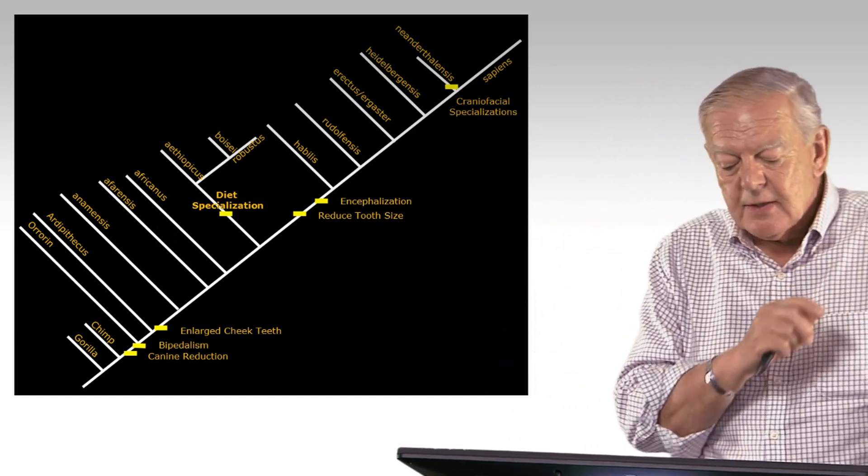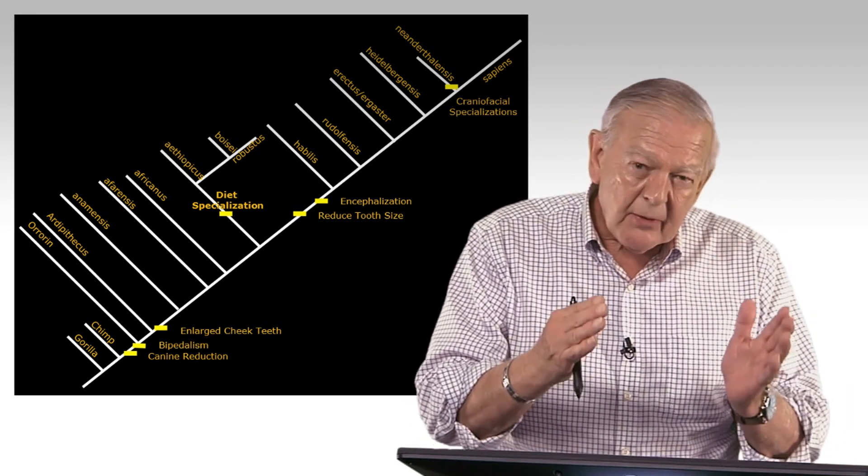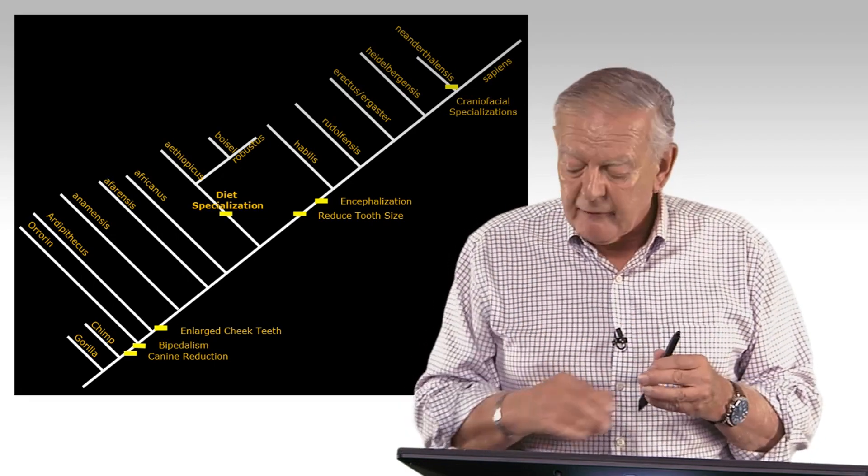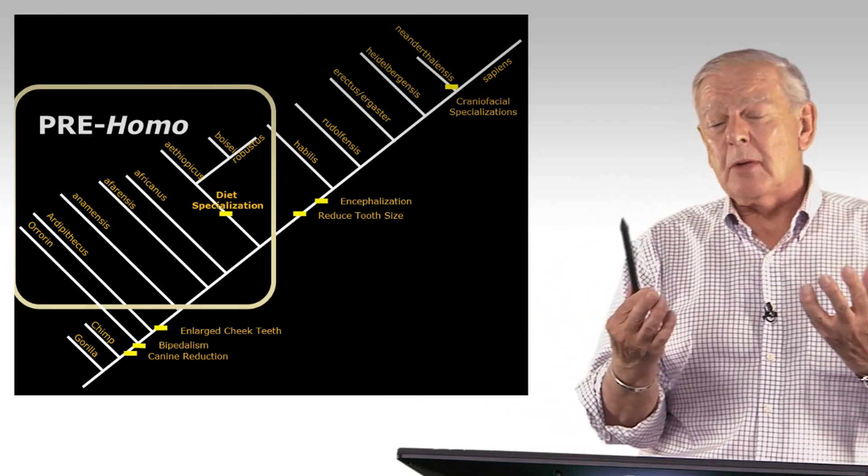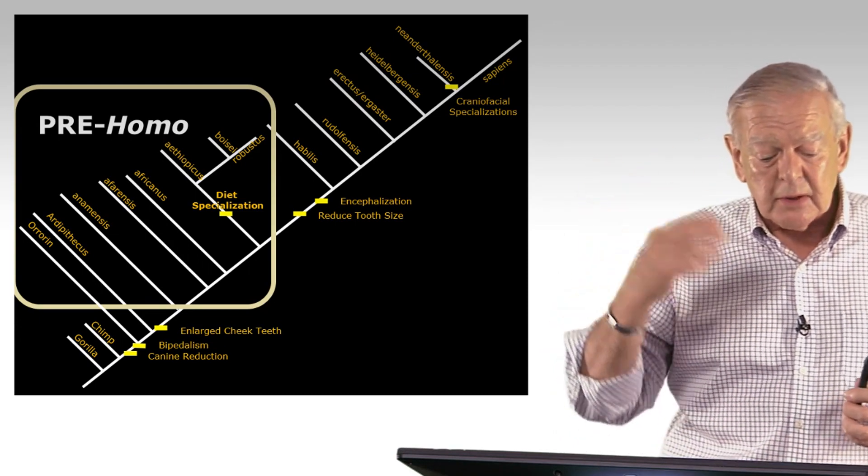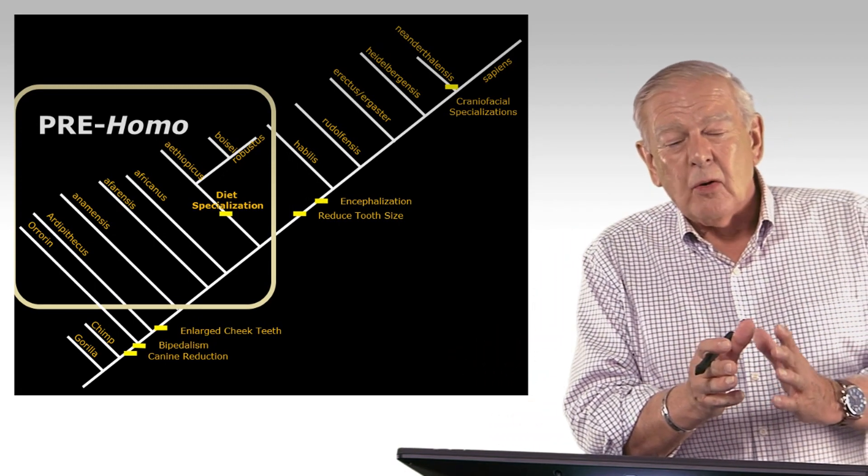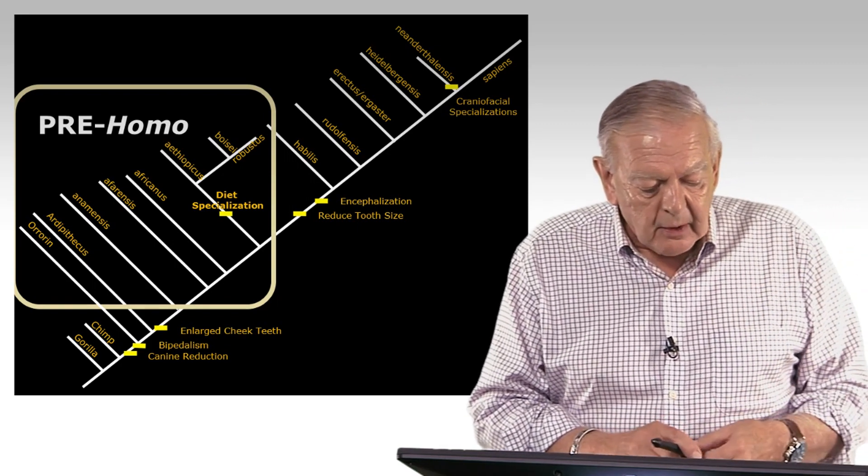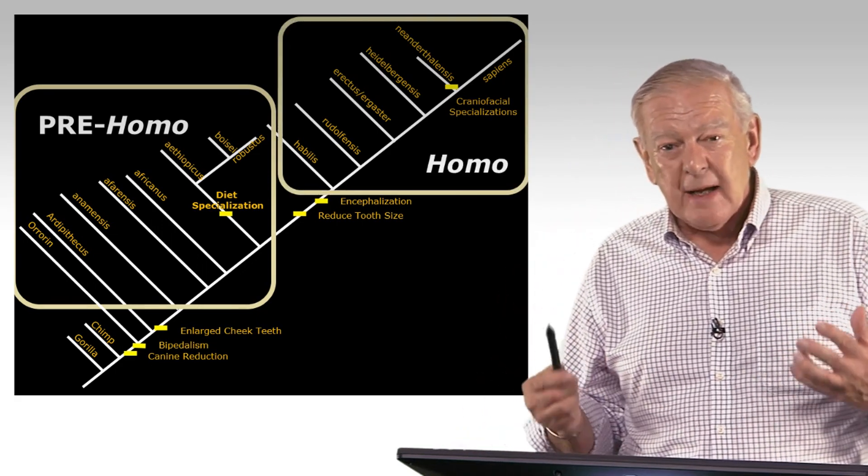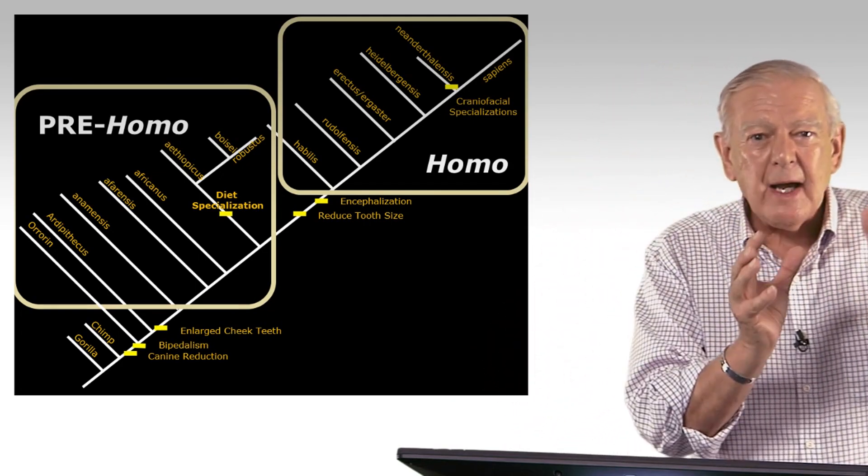So what this shows us, interestingly, is that the bulk of major, I don't want to say steps or stages, but the bulk of those adaptations that characterize us as very different creatures from all other primates, happened first in Africa. So Africa seems to be the homeland, the crucible for human evolution, where humans first appeared, where they underwent these changes, and ultimately evolved into Homo sapiens. So I break this up into a pre-homo group, whether it's Auroran, or Sahelanthropus, or whatever, Ardipithecus. So I break that up into that group, and then into the Homo group, which includes everything from Habilis, Rudolfensis, Erectus, or Gaster, Heidelbergensis, and so on. So that might help you categorize these and understand them.